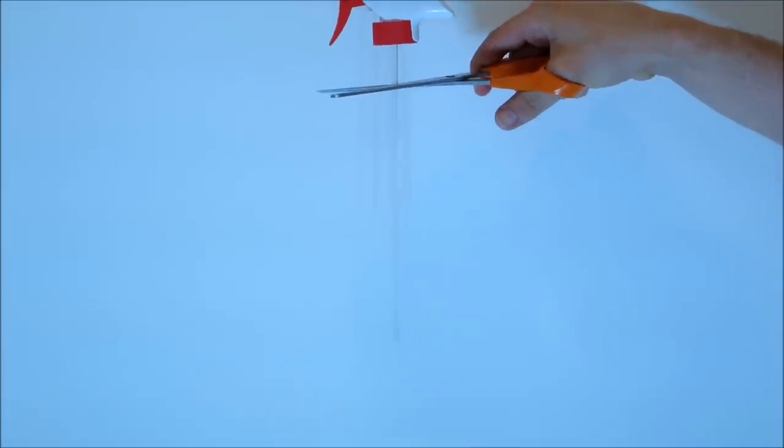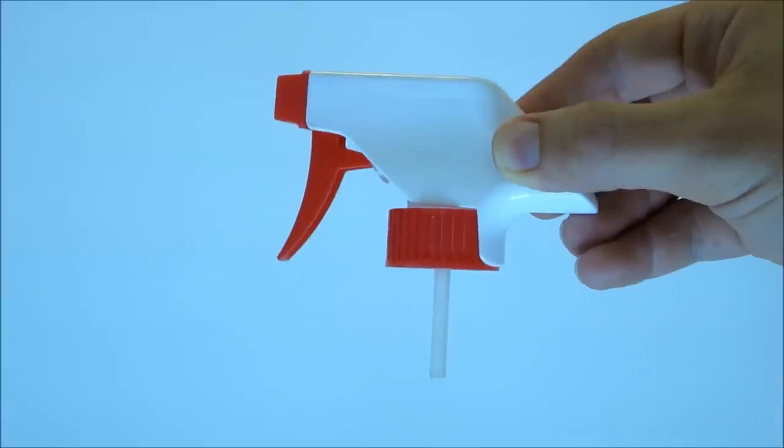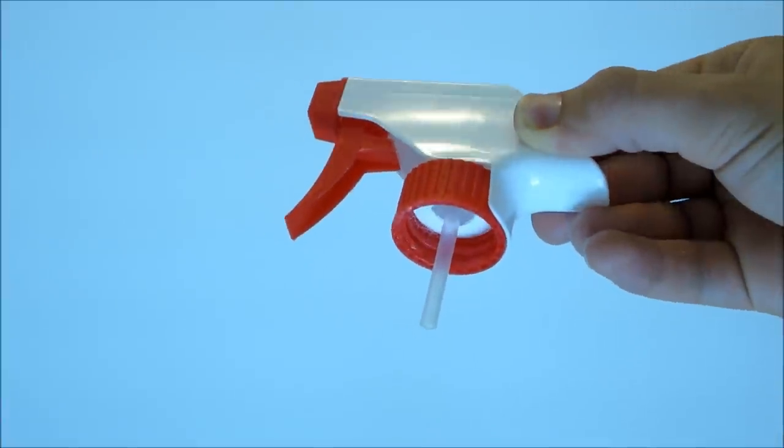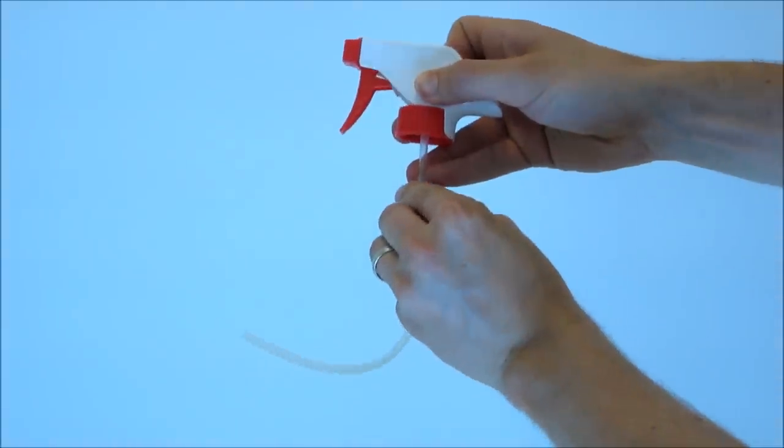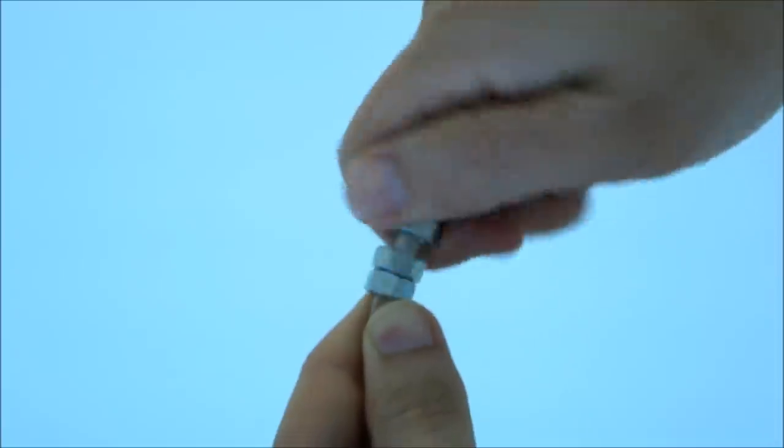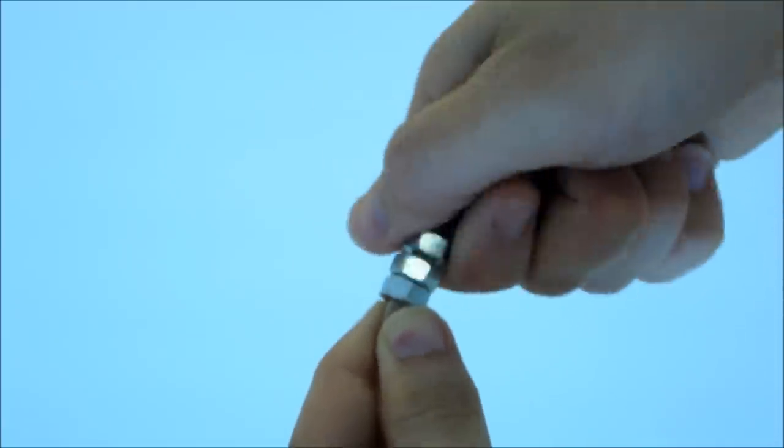Start by cutting the suction tube leaving about 1 inch of the original tube sticking out past the screw cap. Then twist on the piece of flexible tubing. Lastly, twist on the ¼ inch nuts to the bottom of the flexible tube.